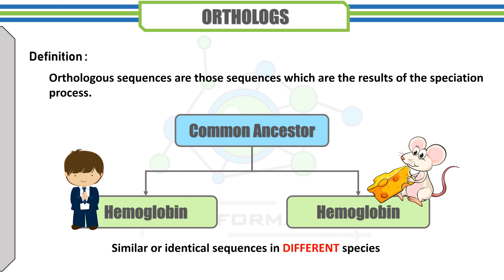Orthologues are sequences that have diverged after a speciation event and are thus found in different species — for example, the hemoglobin gene in mammals. Orthologues are very useful in the construction of phylogenetic trees, comparison of the evolution of genomes, and give information for the classification of organisms.